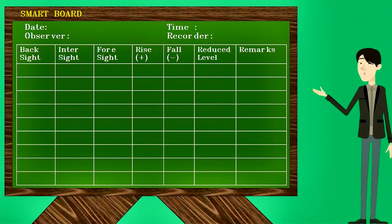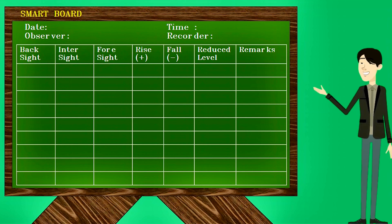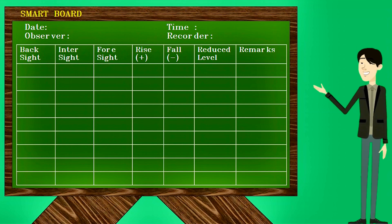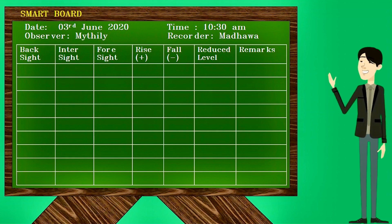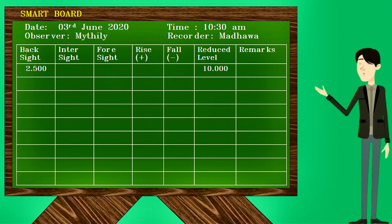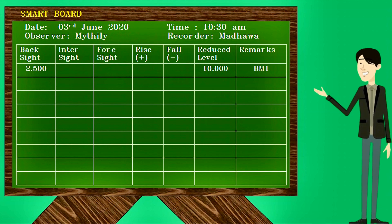We'll see how the recording of these readings is done in the field book. This is the standard sheet used to do calculations by the rise and fall method. First, you need to fill in the details such as date, time, observer, and recorder, because it is important to have records to find the person responsible for the readings. Then you put the backsight reading of 2.5 meters in the relevant column, the reduced level in the reduced level column, and note the benchmark in the remarks column.